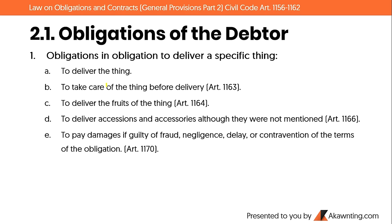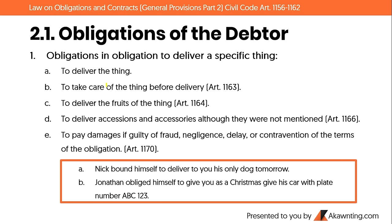C) To deliver the fruits of the thing. Example: if the dog gives birth to puppies, those puppies are considered fruits of the dog. Fruits here is not literal — it means things that exist by virtue of the principal thing. Other examples: plants growing from land are fruits of the land; rent collected from an apartment is the civil fruit of the apartment.